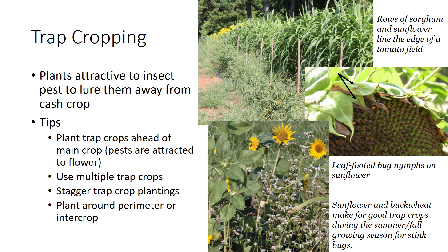The trap crop should be planted at least two weeks before the main crop since the reproductive structures — the flower and seeds — are the main attractor. It is best to use multiple trap crops and stagger them so that pests don't move off of the trap crops. For early spring cash crops, plant triticale in the fall for stink bugs. Sunflower, buckwheat, sorghum, and millet are recommended for the summer to fall period. For protection from the harlequin bug on cold crops, mustard can be used.